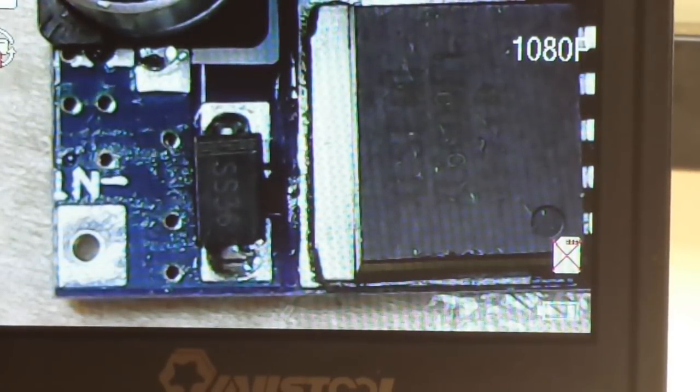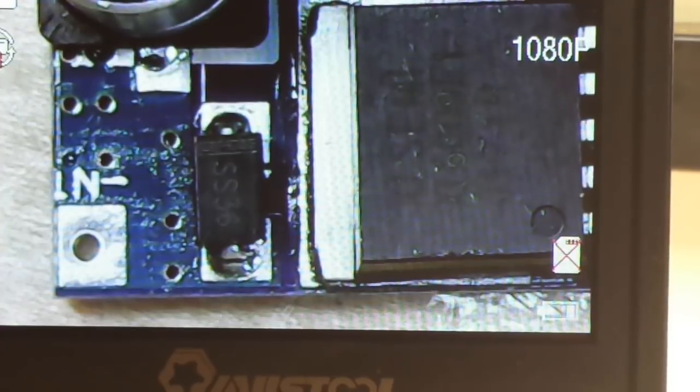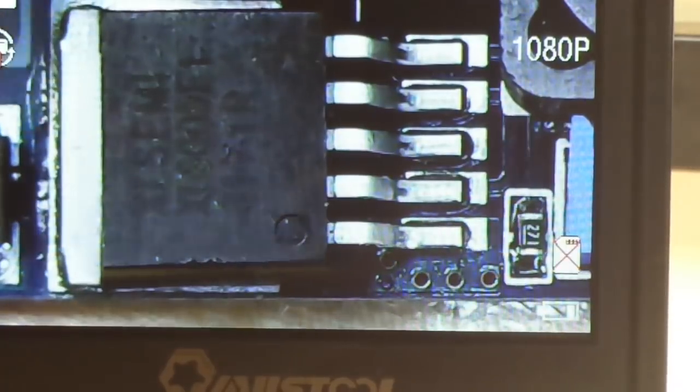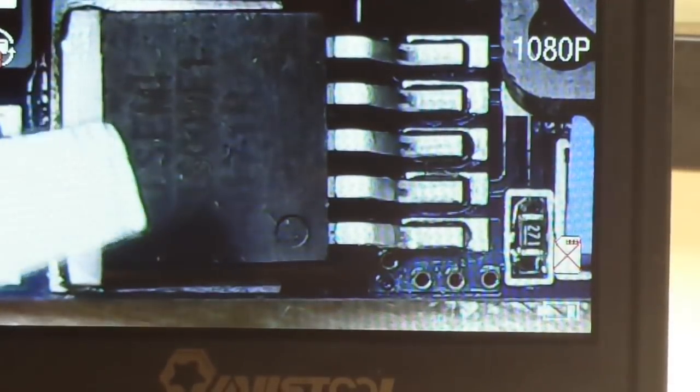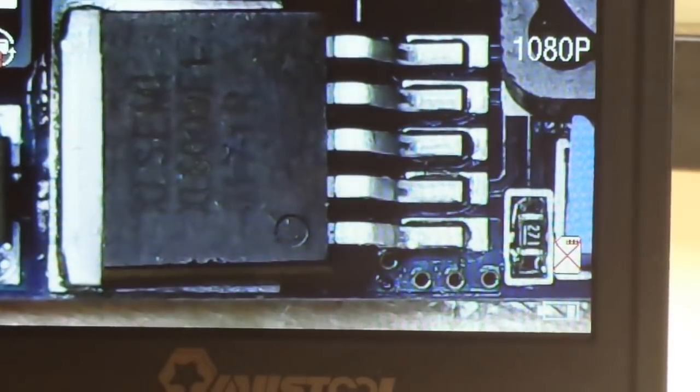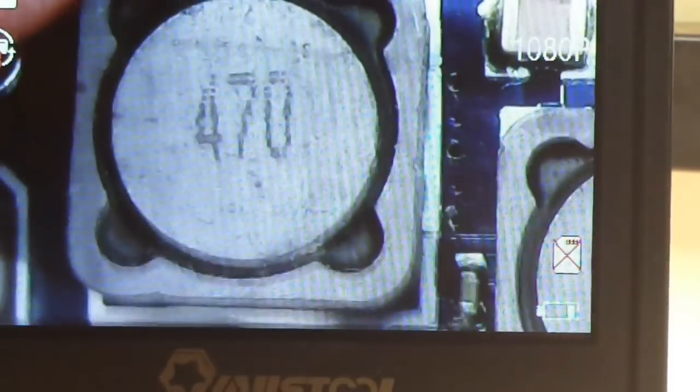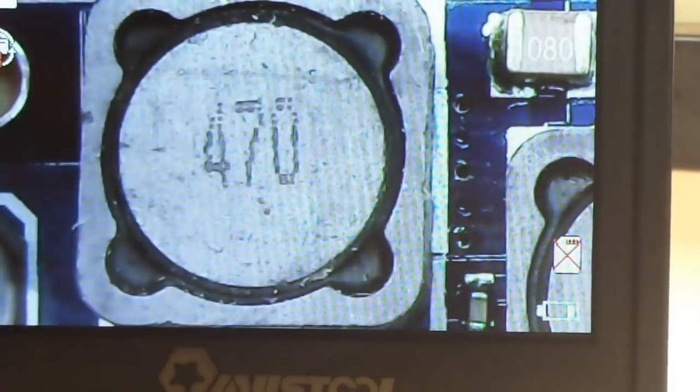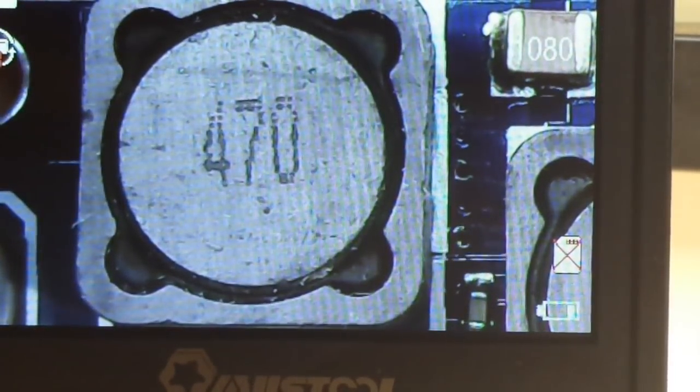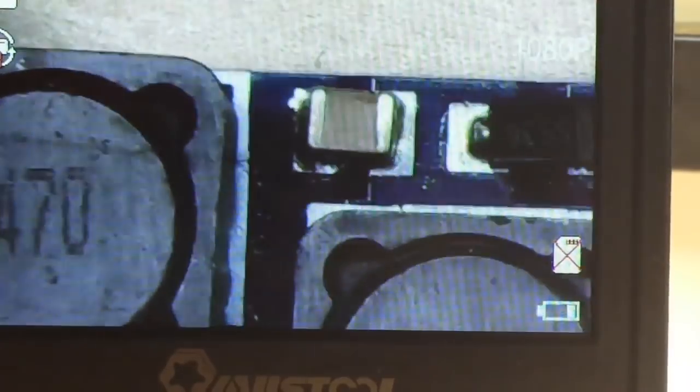Here is our main chip, this is the XL6009 buck and boost. Then up above it here you see we have the 470 Henry inductor, we have a nice big capacitor there, that's a nice capacitor for this size.